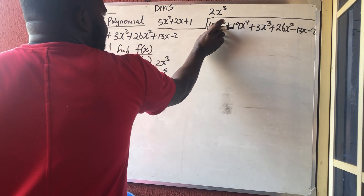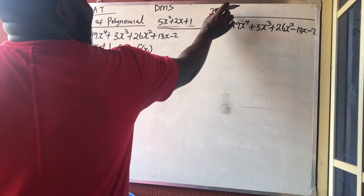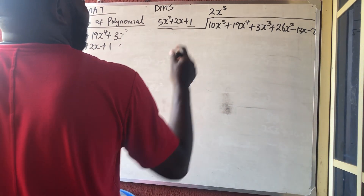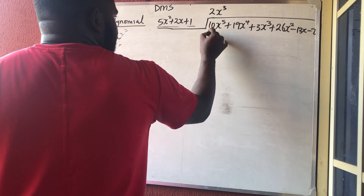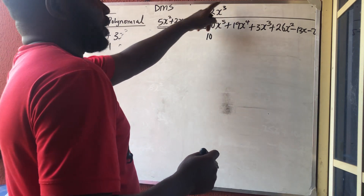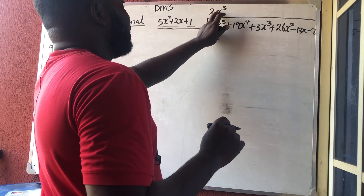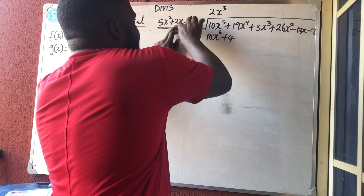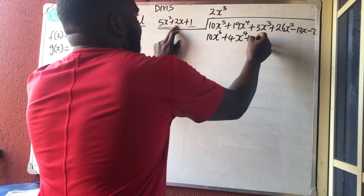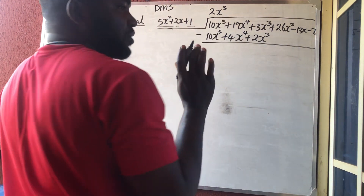Division says only the first term divides the first term, while Multiplication says use your answer and multiply everything in the divisor. So 2x³ times 5x² gives 10x⁵. 2x³ times 2x gives 4x⁴ (using law of indices: 3+1=4). 2x³ times 1 gives 2x³. Now we're done with multiplication, so the next step is to subtract.